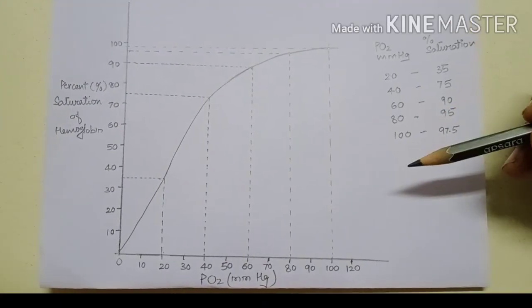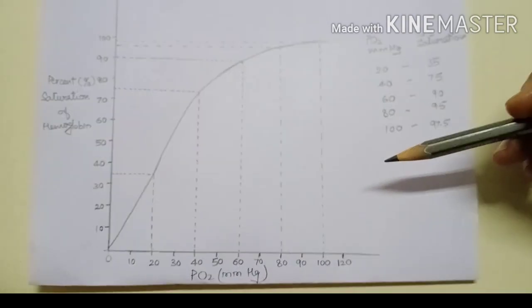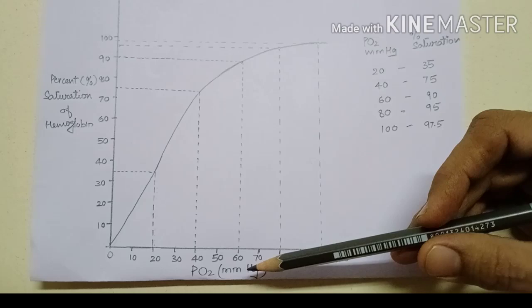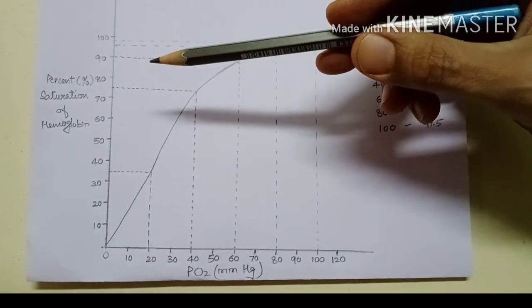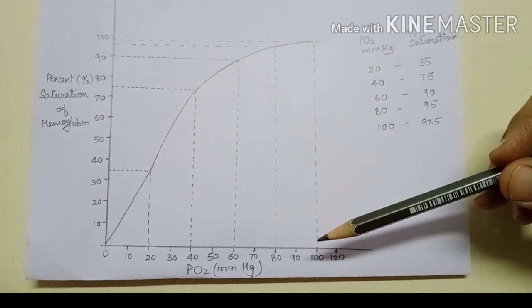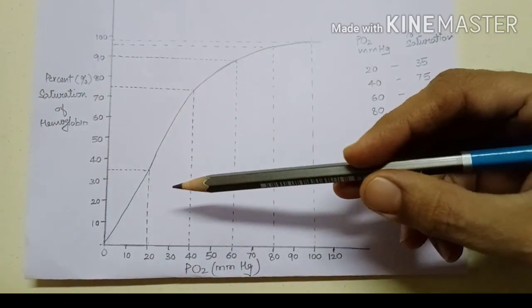This is the Oxygen-Hemoglobin Dissociation Curve. As we have discussed, it shows the relationship between partial pressure of oxygen and percentage saturation of hemoglobin. The relationship is not linear, it is sigmoid shape or S-shaped.